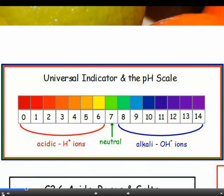We can tell if a substance is an acid or an alkali by testing it with Universal Indicator. Universal Indicator turns a different colour depending on the pH, and we use the pH scale to show how acidic or alkaline a substance is.